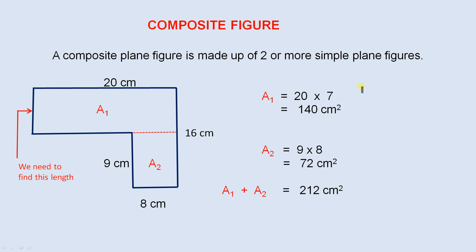Now here is a composite figure. A composite plane figure is made up of two or more simple plane figures. So in order to find the area of this composite figure here, you notice it is made up of two rectangles. That rectangle there, which I've called A1, and this rectangle here, which I've called A2.